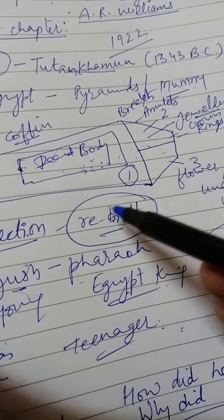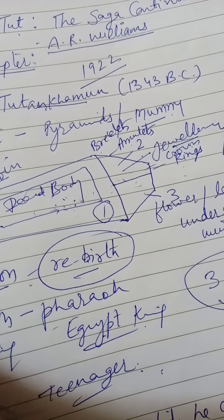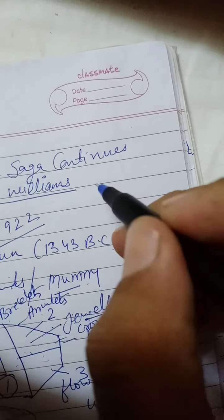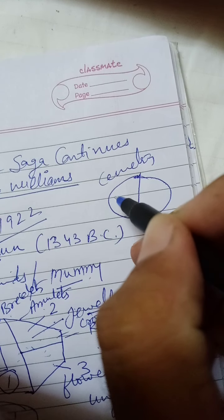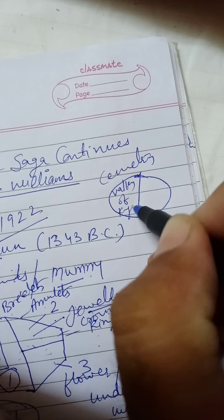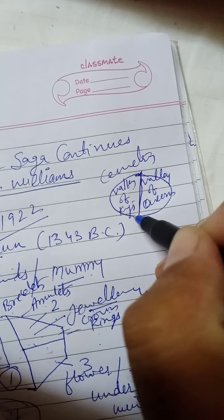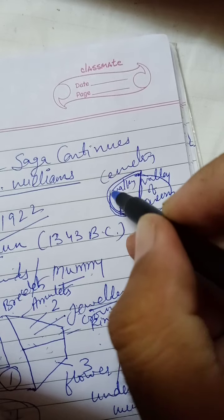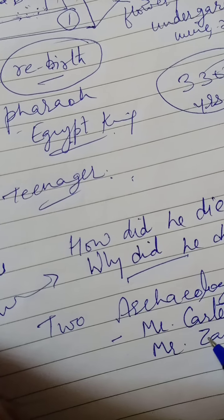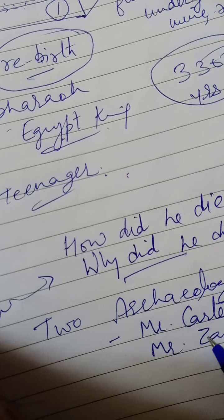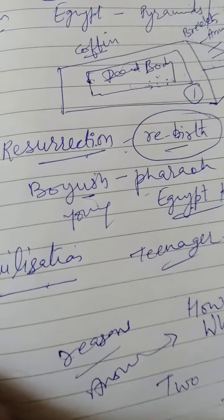We have a description about the resurrection — people used to keep all these things with the dead body of the king. The burial place was divided: one was the valley of kings, reserved only for the dead bodies of male members. The first task before Zahi Hawass and Mr. Carter was to find out the real mummy of Tutankhamun out of many mummies.